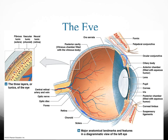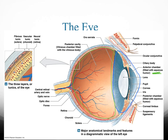We have two major compartments. We have what we call an anterior cavity, and then we have on the back a posterior cavity. The anterior cavity is filled with a liquid called aqueous humor, and the posterior cavity is filled with a liquid called the vitreous body. The vitreous body is more viscous than the aqueous humor, so it's thicker.